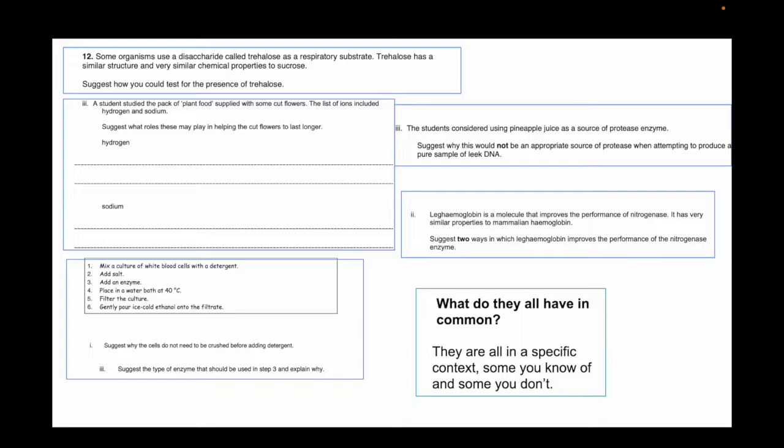So yes, now let's see what these questions are talking about. Just by skimming through, you can see that they vary a lot, don't they? At the top we have suggest how you could test for the presence of trehalose. I mean, what is trehalose? We are not taught it in the specification, but I'll get onto that in a bit. Then we have roles of hydrogen and sodium at the bottom, why cells do not need to be crushed before adding detergent, many more.